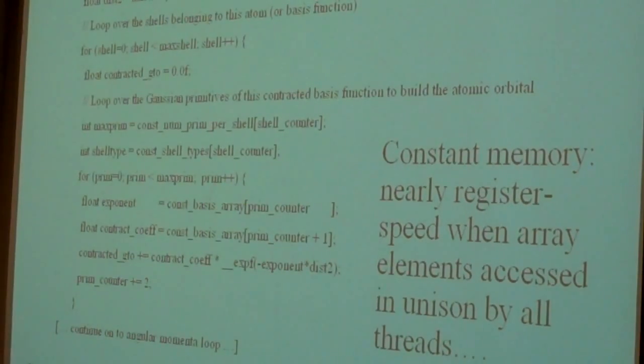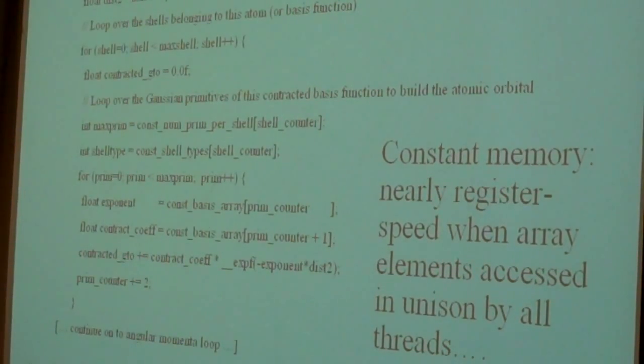But they are reading the same arrays of shells and angular momenta and orbital contraction coefficients, all those different things. And so all of that data that's common to all the workers can be in constant memory. And because they're all accessing the same element at the same time, they get a performance that's nearly the same as if it were in a register. So that's another way we're tremendously amplifying the bandwidth.